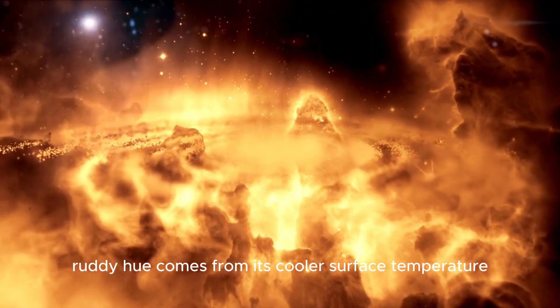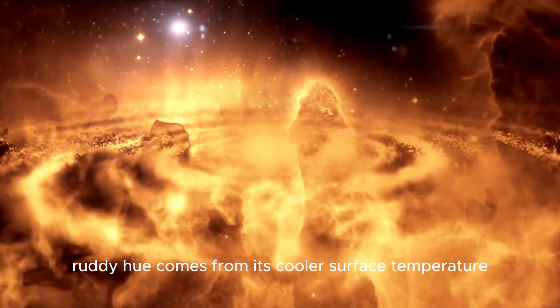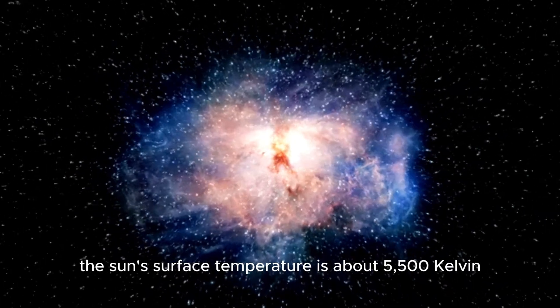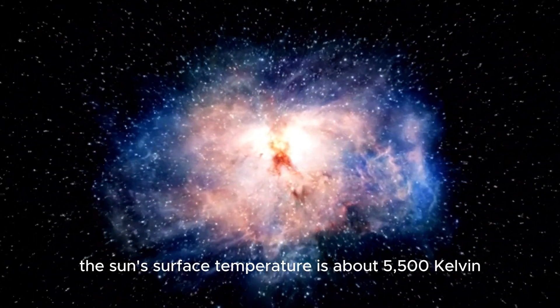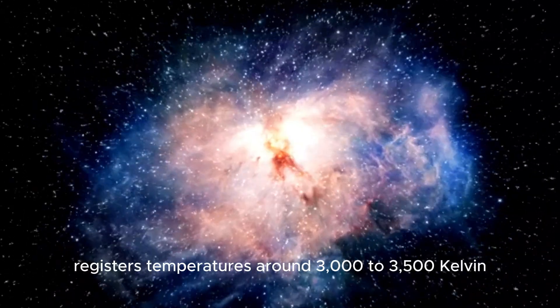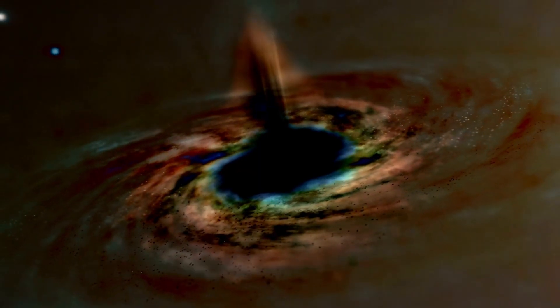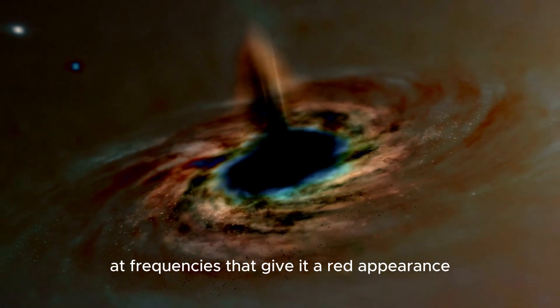Betelgeuse's extraordinary ruddy hue comes from its cooler surface temperature, compared with stars like our sun. While the sun's surface temperature is about 5,500 Kelvin, Betelgeuse's cooler surface registers temperatures around 3,000 to 3,500 Kelvin, emitting light at frequencies that give it a red appearance.